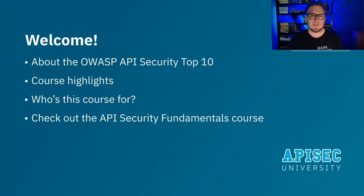This course highlights the most common API security vulnerabilities and is meant to help educate the community of builders, breakers, and defenders. The course will help you identify and analyze the most common weaknesses that plague modern web application programming interfaces, or APIs. By the end of this course, you should have an understanding of the variety of vulnerabilities associated with APIs, the attack vectors involved, and the technical impact an exploited vulnerability could have. This course is great for anyone involved in the API economy — bug bounty hunters, developers, penetration testers, organizational leadership, and anyone else interested in learning about API security.